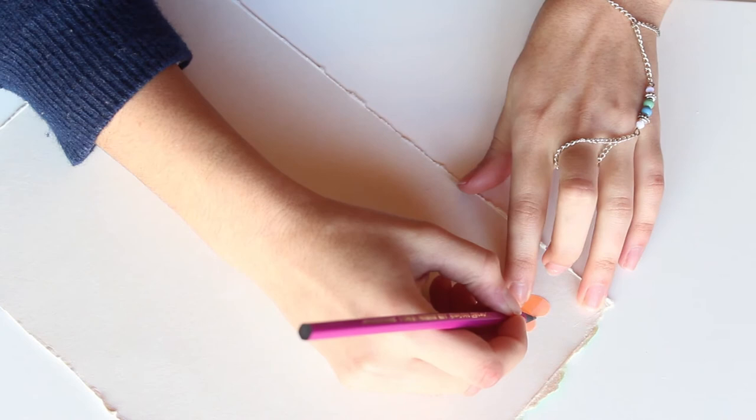Take apart the cereal box and trace a bunch of hearts onto the cardboard. You'll need at least three hearts to make each pendant.